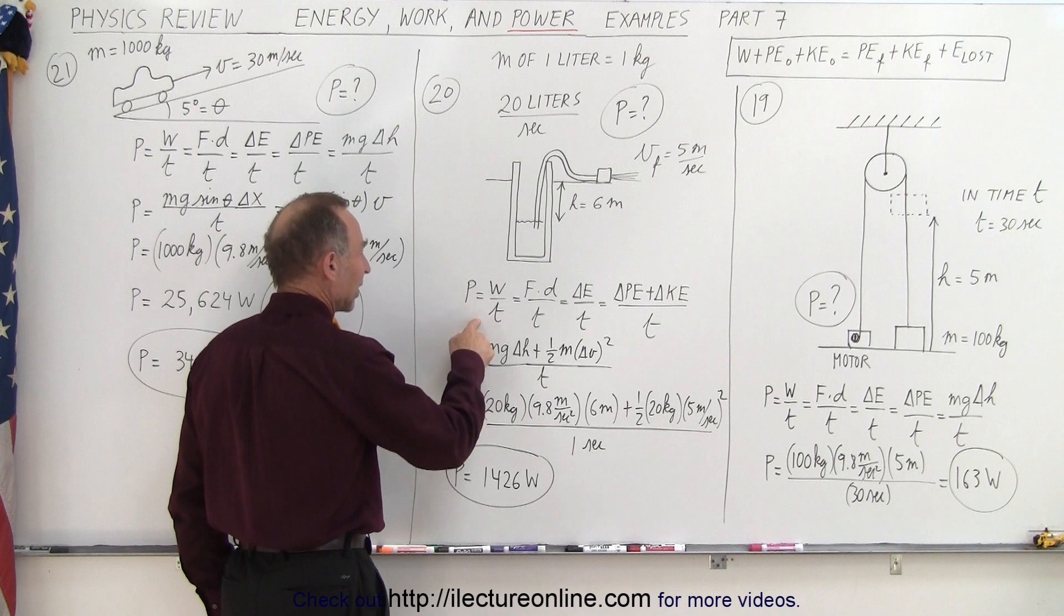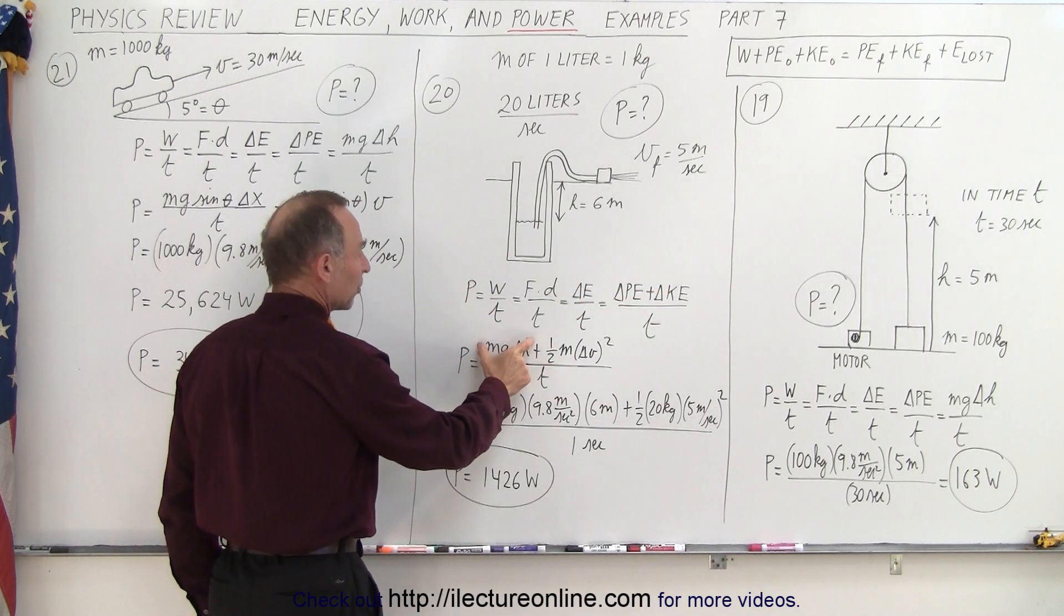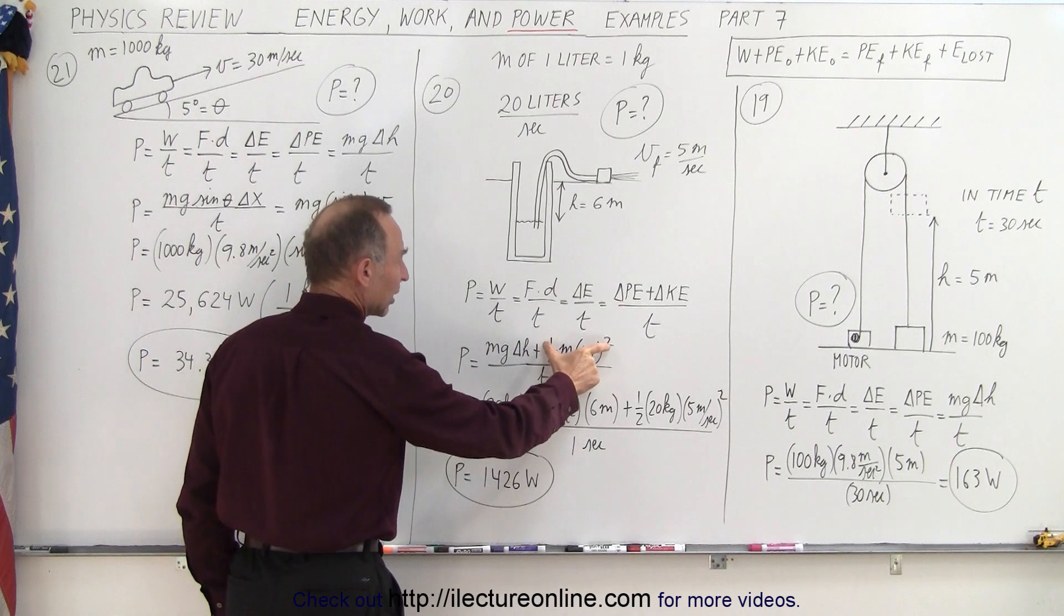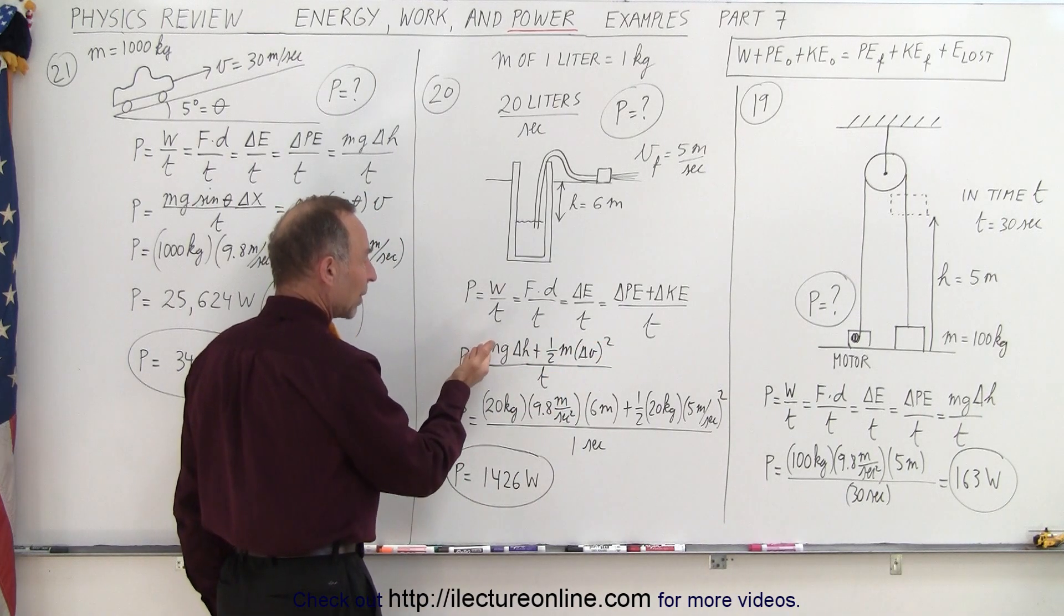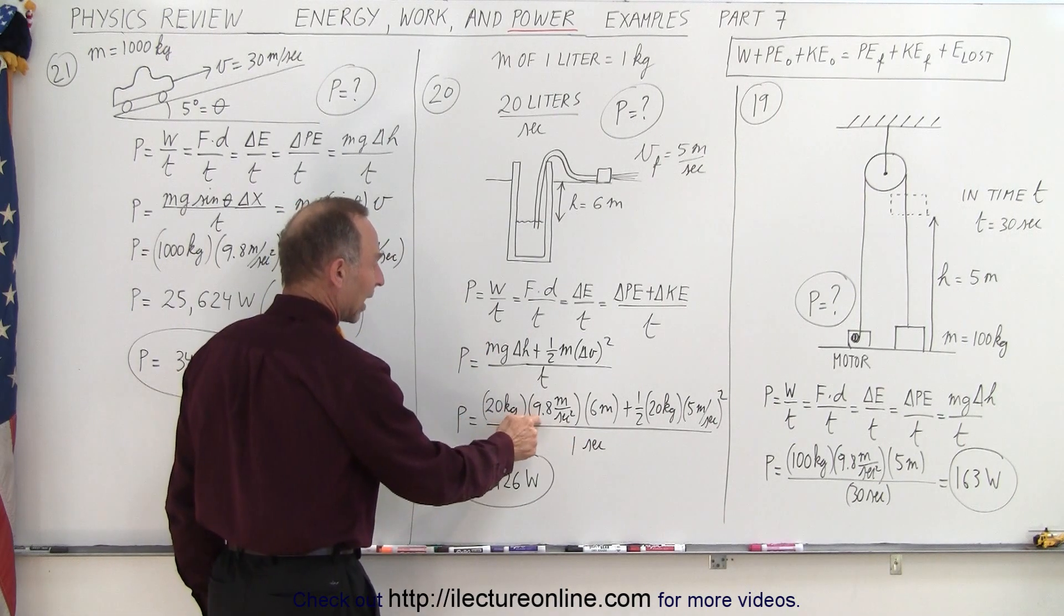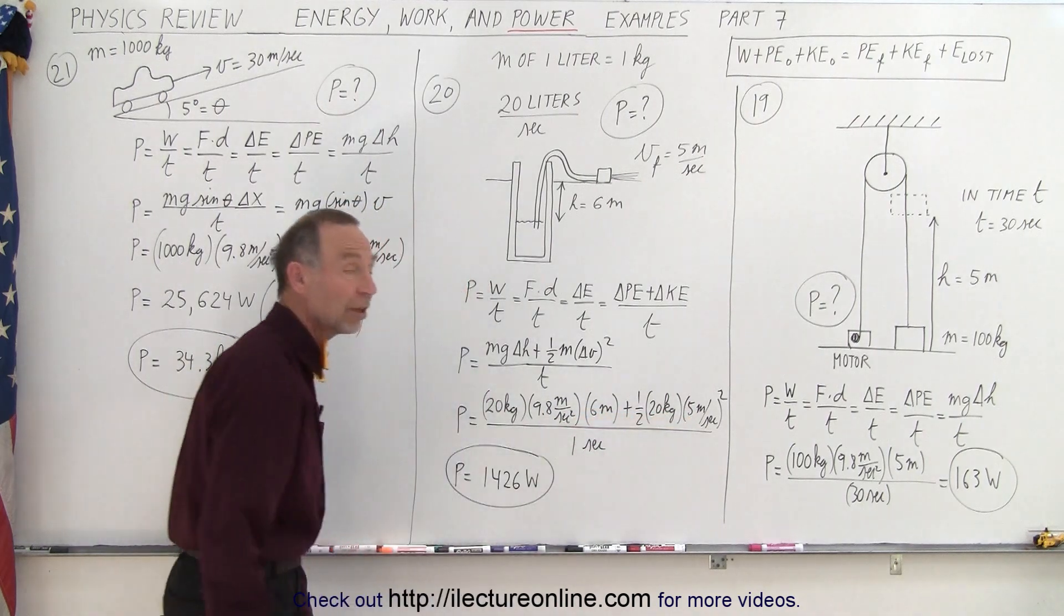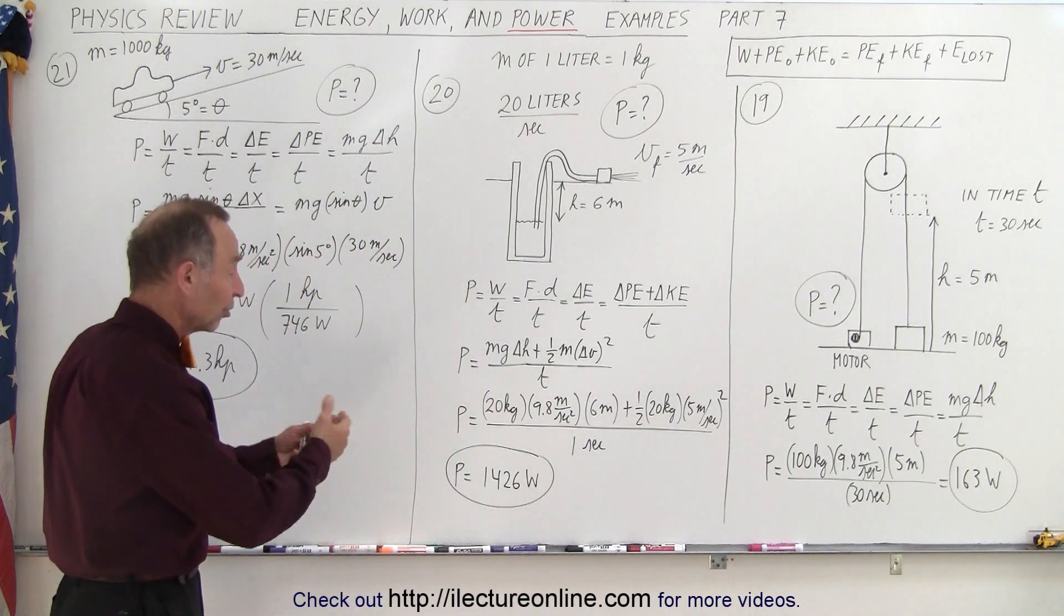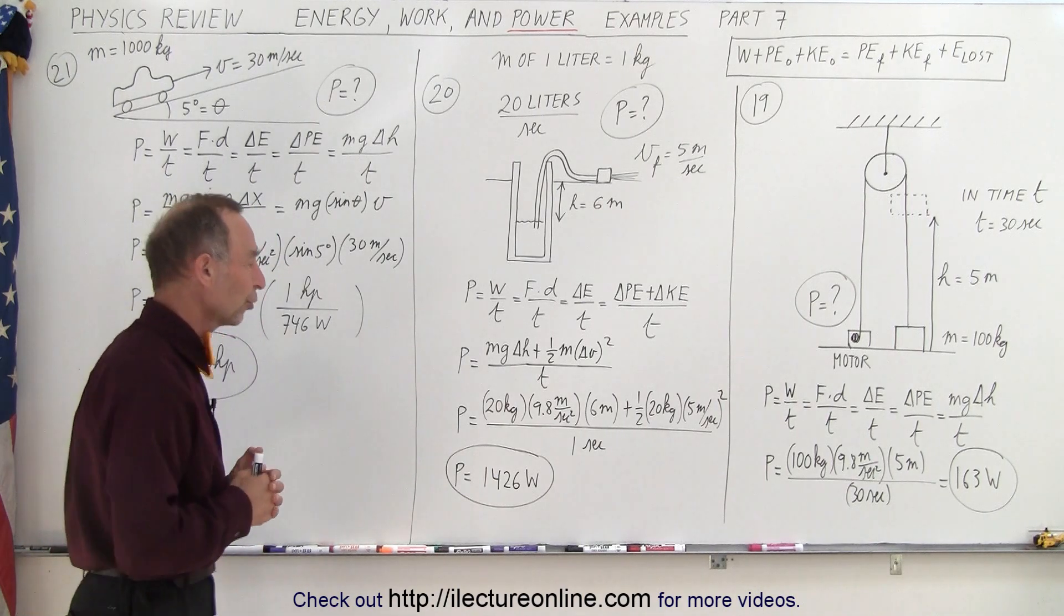So power is work over time or change in energy over time, and the change in energy is going to be the change in potential energy plus a change in kinetic energy over the time allotted. So we're going to take 20 kilograms every second, so time is 1 second, 20 kilograms times g times the change in height plus one half times 20 kilograms times the change in velocity squared. And that gives us a power requirement of 1426 watts, which is about 2 horsepower.